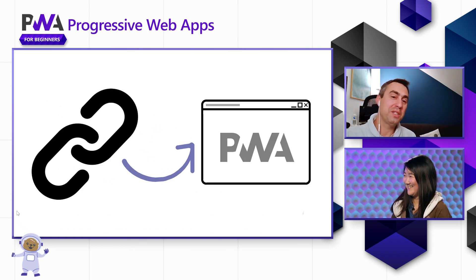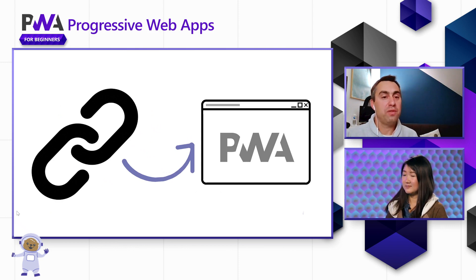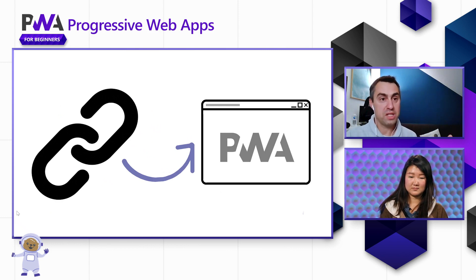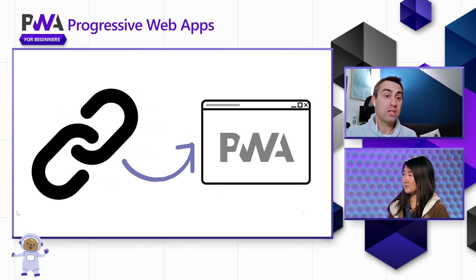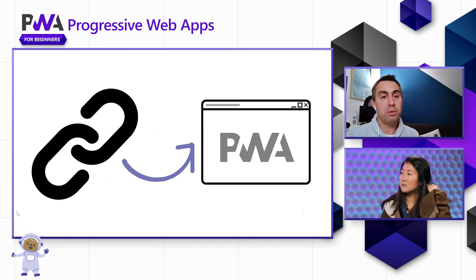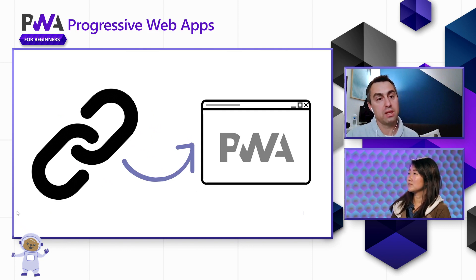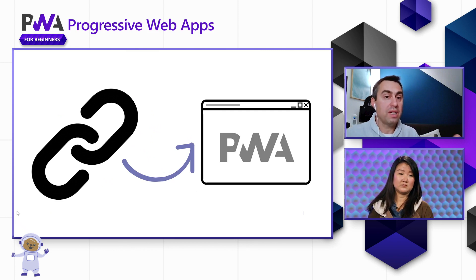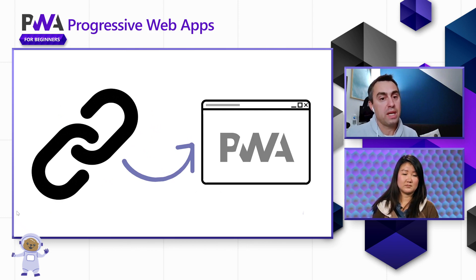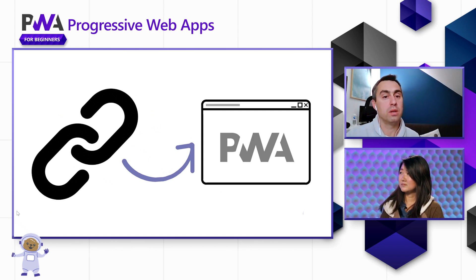Another capability is the ability to handle links and protocols. If somebody has sent you a link to a Spotify song or a Teams or Slack channel, you know that when you click on that link it doesn't open in the browser — the app opens up instead. That's a great capability that real apps have, and progressive web apps can also do this. You can register to be a handler for a custom protocol and therefore handle those particular links.